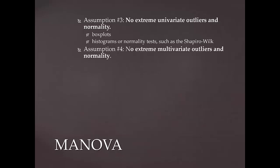Assumption 4 is that there is multivariate normality, which is really based on univariate normality. But what we're really going to test here is that there are no extreme multivariate outliers. This assumption is examined using Mahalanobis distance. The data's Mahalanobis distance values are compared against a critical value outlined in a chi-square critical value chart. If the data value exceeds the critical chart value, then the assumption is not tenable. If it's below the critical value, then it's tenable.